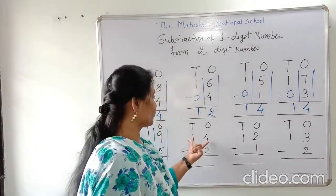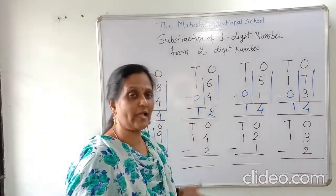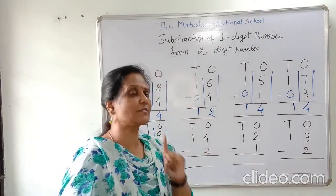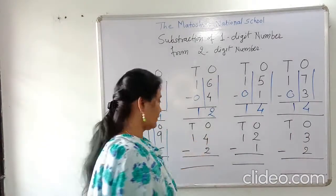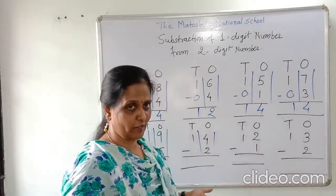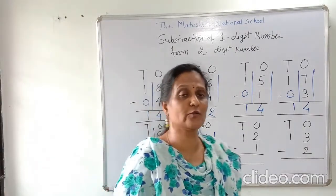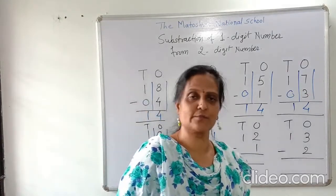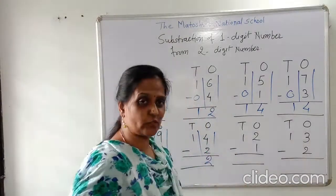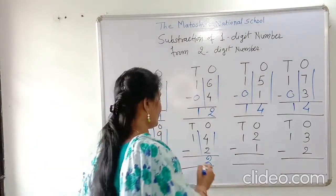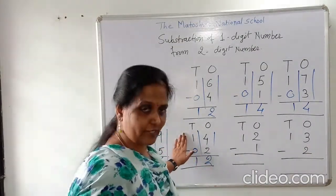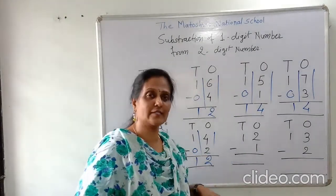Another two digit number: fourteen. I write one in tens place and four in ones place. Now we have to subtract two from fourteen. Two is a single digit number, so I write it in ones place under this four. We have to subtract two from four. Let's count after two up to four: two, three, four. How many fingers are remained? Two. I write two here. There is no number in tens, so one minus zero is one. So fourteen minus two, answer is twelve.